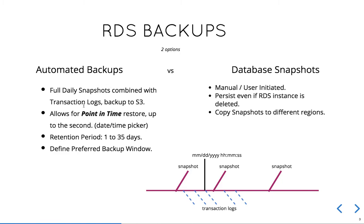Within automated backups, the transactional log backup to S3 combined with the full daily snapshot is different from the manual database snapshot, which is only on an interval the user selects. Automated backups give us a retention period of 1 to 35 days, with the default being 7 days. You can also define a preferred backup window — a scheduled maintenance window during off-hours, not during peak times.